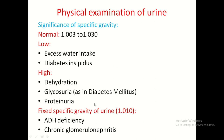Sometimes urinary specific gravity becomes fixed rather than showing normal diurnal variation — this is called fixed specific gravity of urine, usually 1.010. Causes of fixed specific gravity include ADH deficiency and chronic glomerulonephritis. This is a common exam question: what is fixed specific gravity of urine and what are its causes?